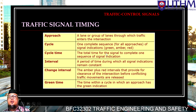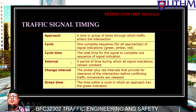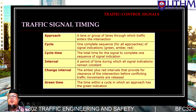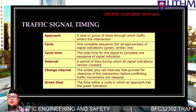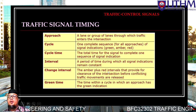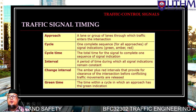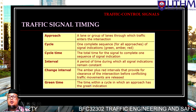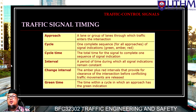Next, 'cycle time' — the total time for a signal to complete one sequence of signal indications. For 'interval' — the period during which all signal indications remain constant. 'Change interval' refers to amber plus red interval, providing clearance at the intersection before conflicting traffic movements are released. 'Green time' is the portion within a cycle during which an approach receives green indications.